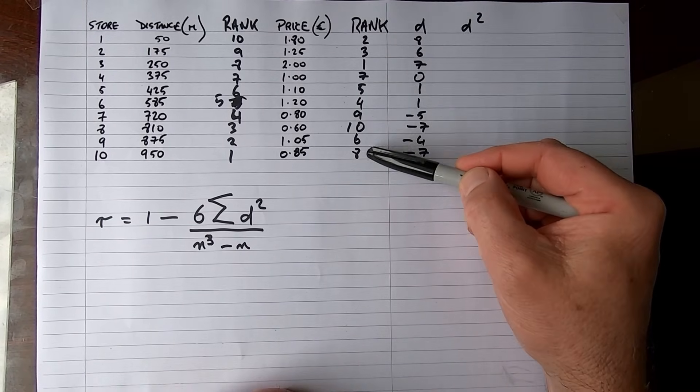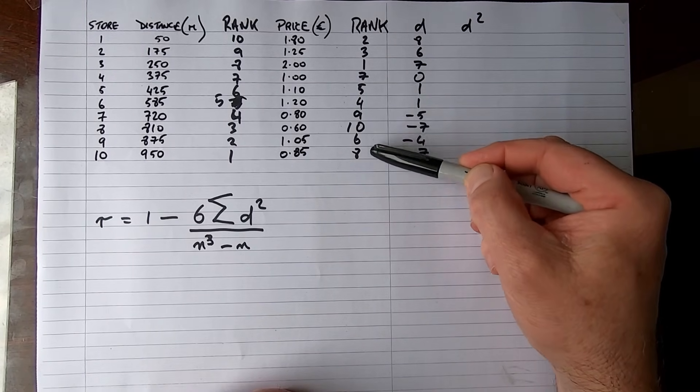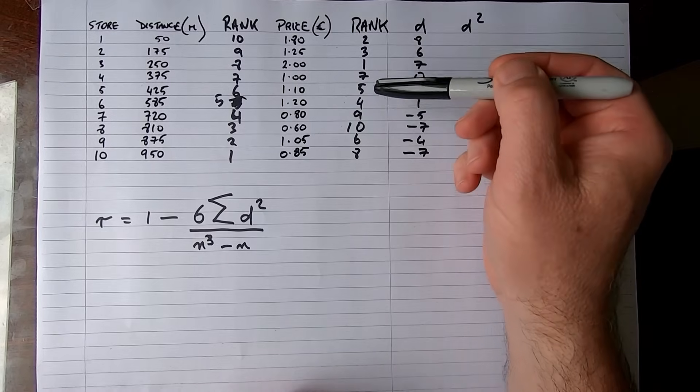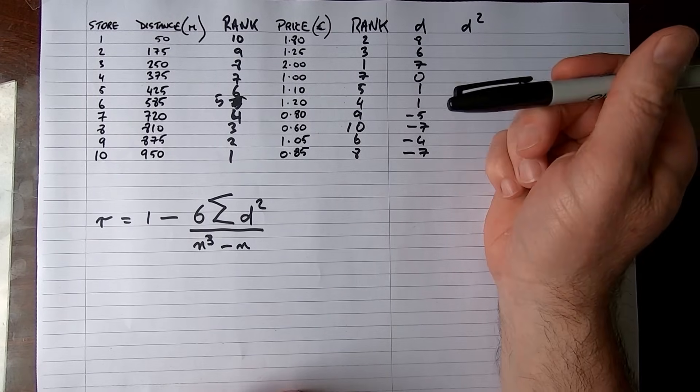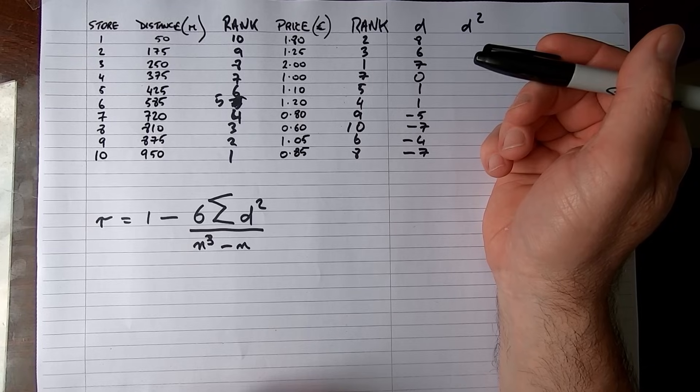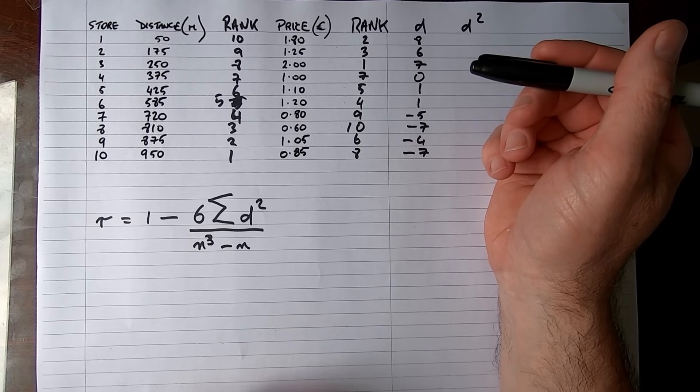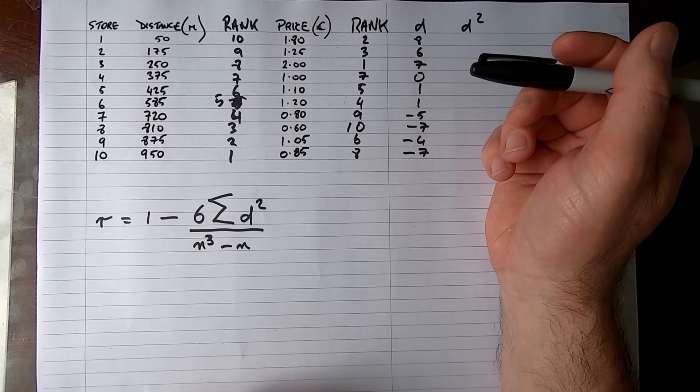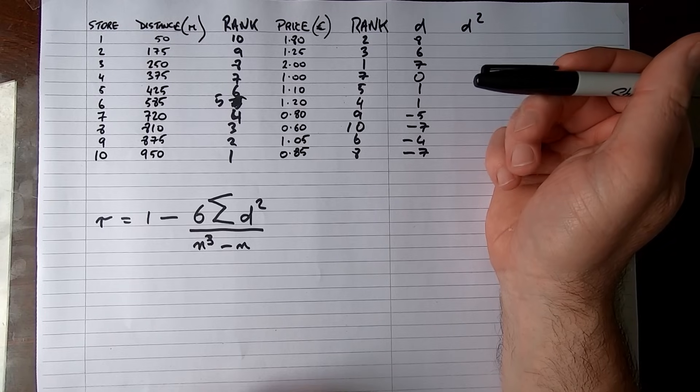But before I continue, just a quick word about the ranks. You can see that there are no tied ranks in here. You will come across this—if two values of price were the same or two values of distance were the same, we would end up with tied ranks. If that occurs, you should not use Spearman's rank correlation coefficient formula. Some statisticians will say that in a large data set, if you've only got a small number of ties, it's okay, but the overall value of your coefficient will be weakened if there are ties, and you should use a different test. I'd recommend a Kendall's tau test.